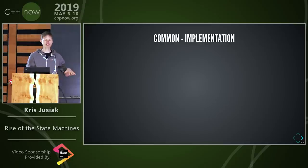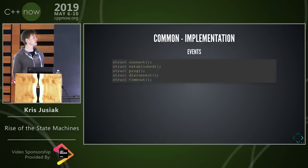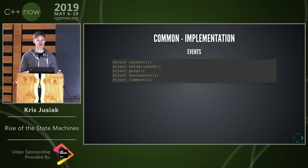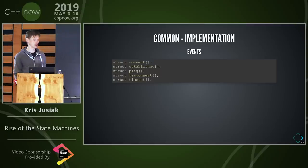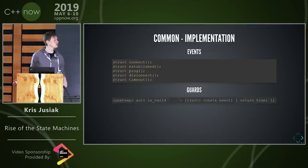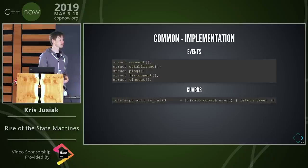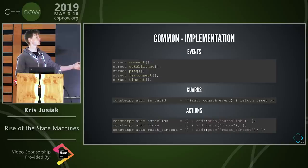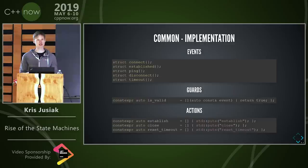We'll also look at some Boost libraries and non-Boost libraries like SML. To establish common ground: events will be simple structs — that's how we trigger our state machines using process_event as the API for all of them. There'll be a guard is_valid which returns true in our case, and actions that just print something so they won't be fully optimized away when we compare the assembly output.